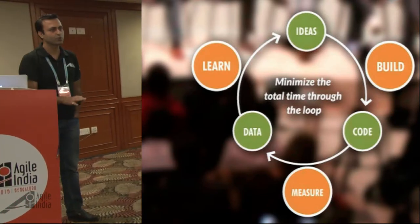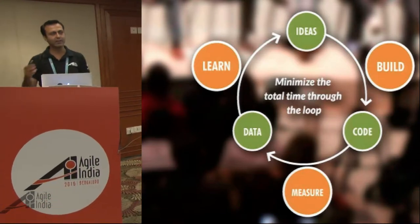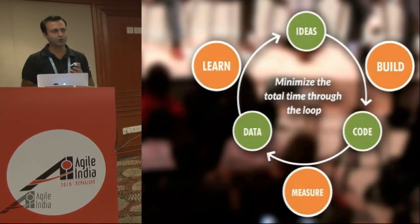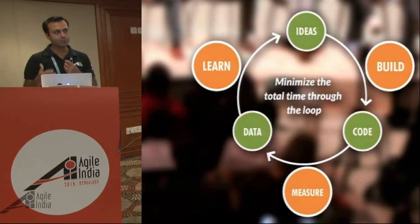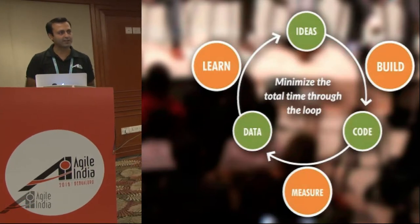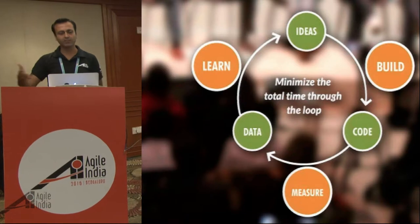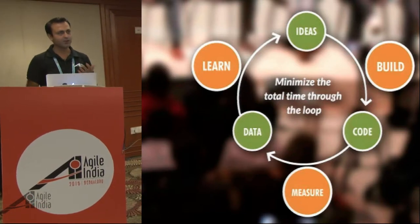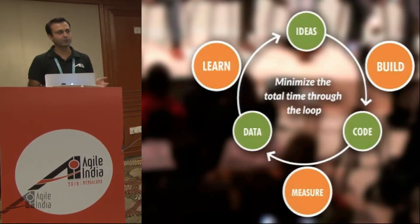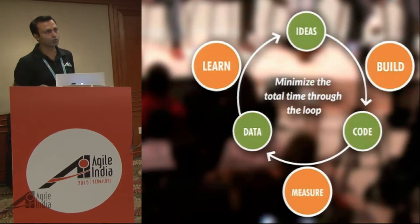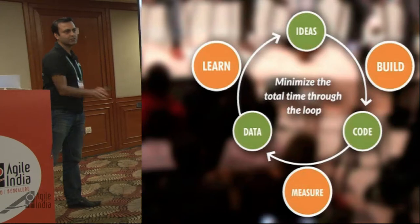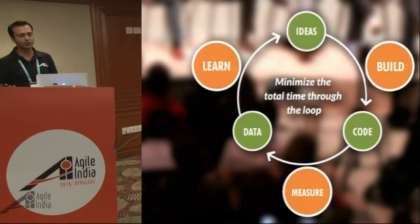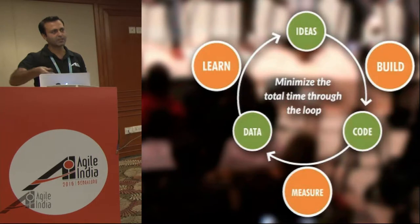This is the loop you go through if you're working at a startup. You have an idea, you start building on it — it could be a prototype, coding, a whole bunch of things. As you build, you continuously sort of iterate and measure what you're building: is it working or not? You learn from it, collect a lot of data, and put it back into the overall loop. The successful startup iterates through this loop dozens of times during a week on every feature request. That's where you start gaining traction.